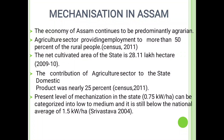Next is mechanization in Assam. The economy of Assam continues to be predominantly agricultural. The agriculture sector provides employment to more than 50% of rural people. As per the census of 2011, net cultivated area of the state is 28.11 lakh hectare in 2009-2010. Contribution of the agriculture sector to the state domestic productivity was nearly 25%. The present level of mechanization in the state is 0.75 kilowatt per hectare, which can be categorized as low to medium, and it is still below the national average of 1.5 kilowatt per hectare. This study was done by Srivastava in 2004.